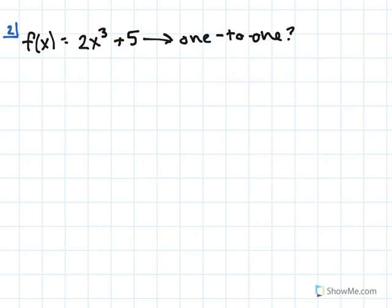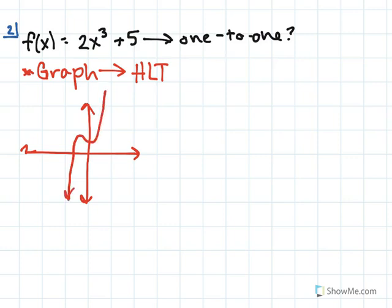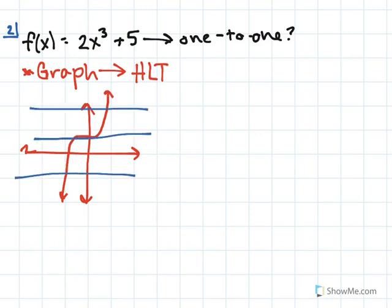In this question we're given the function 2x cubed plus 5 and we're asked whether or not it's one-to-one. Whenever you're given a question like this, you can graph your function and then perform the horizontal line test. I'm going to draw a rough graph — this is not accurate, just to give you an idea of what the graph looks like. If we were to draw horizontal lines through the graph, we would see that it doesn't cross more than once, and so yes, this function is one-to-one.